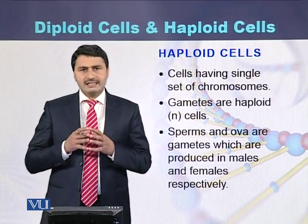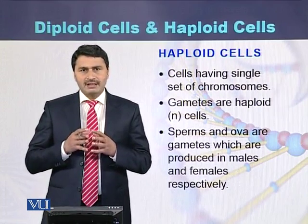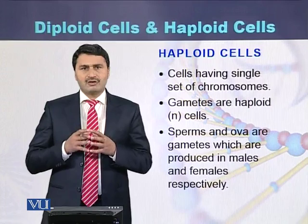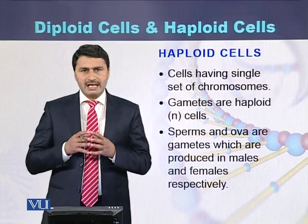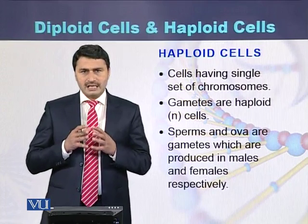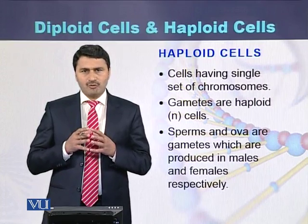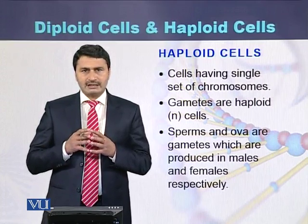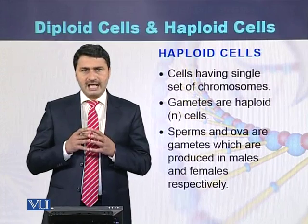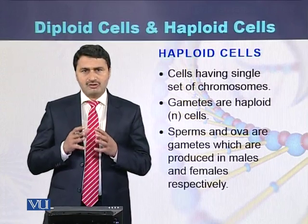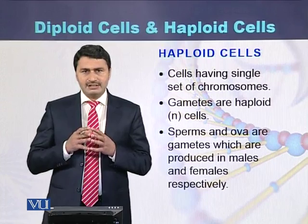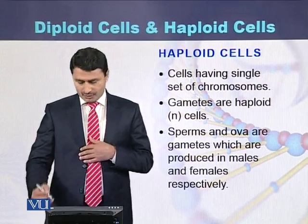Haploid cells. Cells having a single set of chromosomes are called haploid cells. Examples include sperms and ova, or eggs — these are haploid cells. They have 1N, meaning they contain 1N of chromosomes.